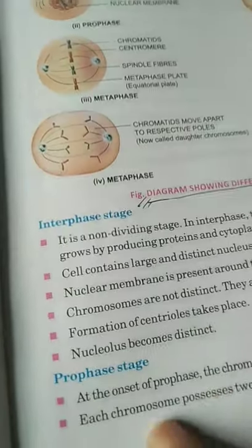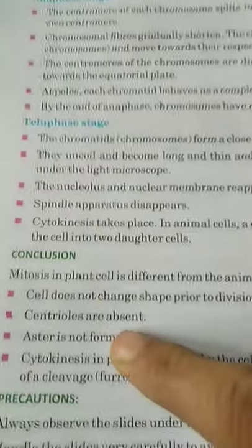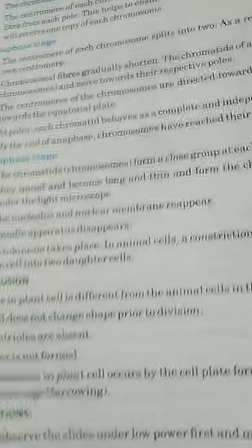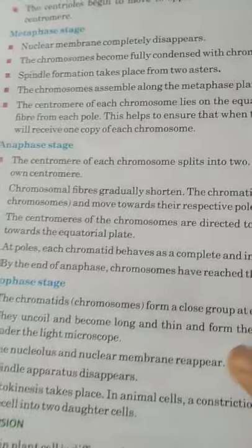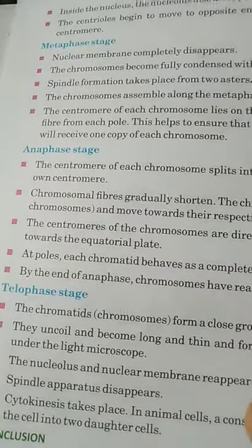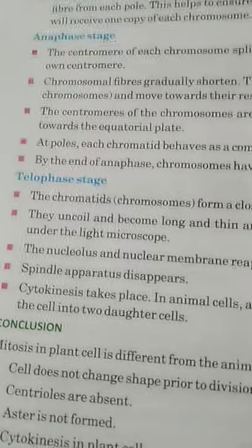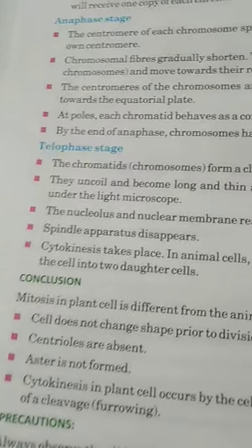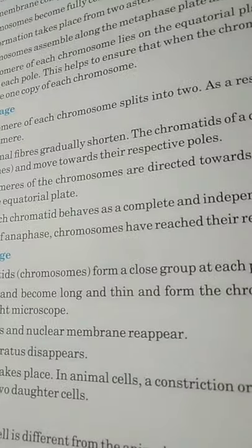You have to write everything below these diagrams showing different stages of mitosis in an animal cell: interphase stage, prophase stage, as well as all the stages — metaphase, anaphase, telophase — after that conclusion and precautions. You can write three points from each phase, and for conclusions, if there are five points, you can write only three points. That is about the first experiment.